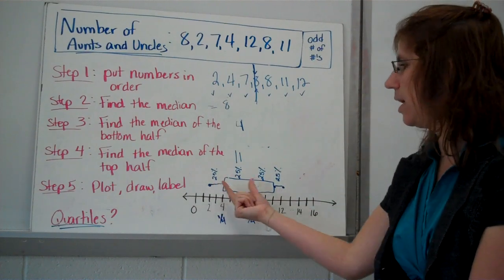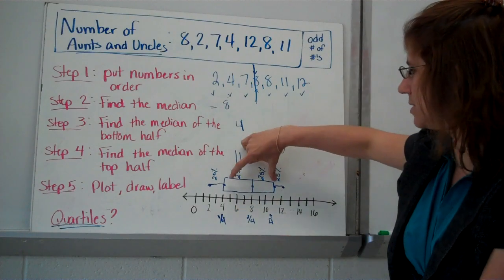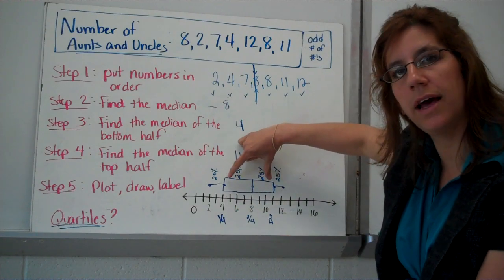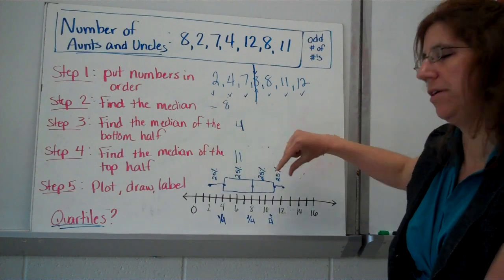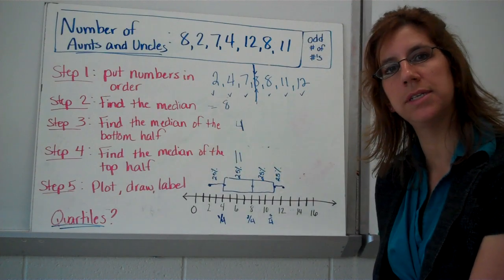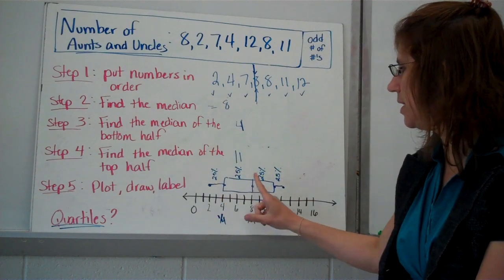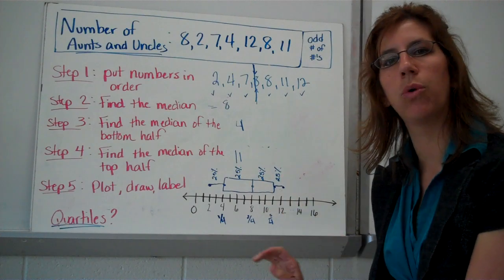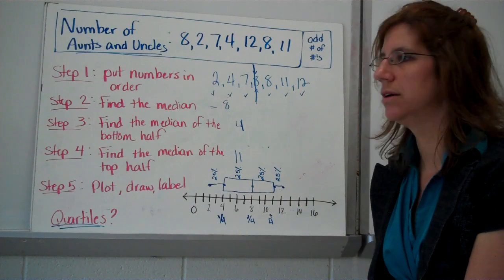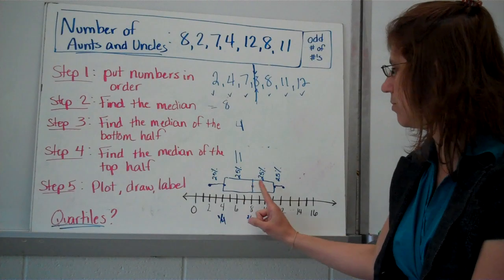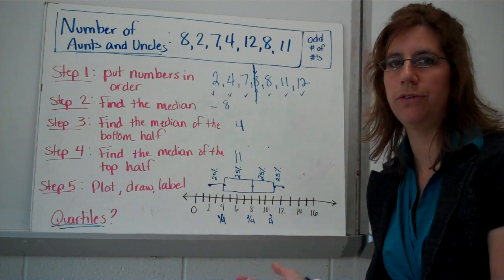So if you, obviously adds it all up to be 100%, the box takes up 50% of the data, and the whiskers would take up 50% of the data if you added them together. Each piece represents 25%, or one quarter, of the data. Quartiles separates the graph into, or the data set, into four parts.